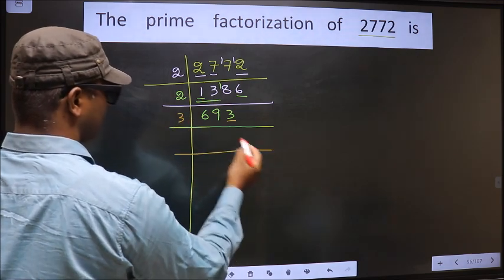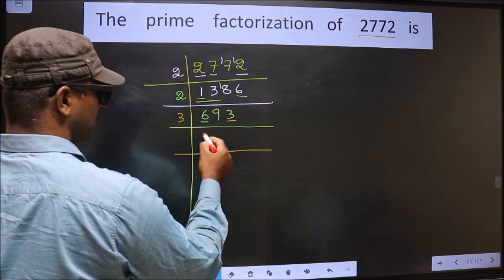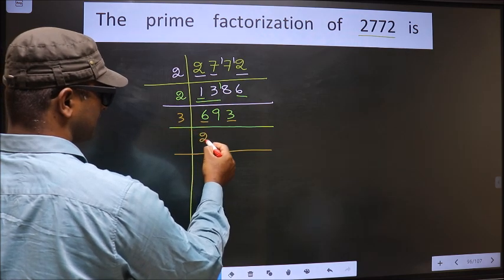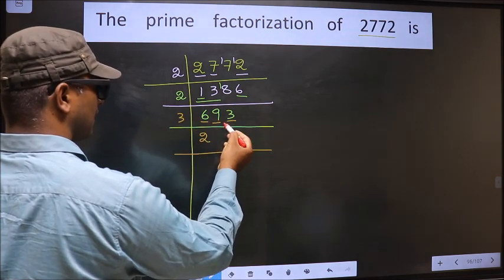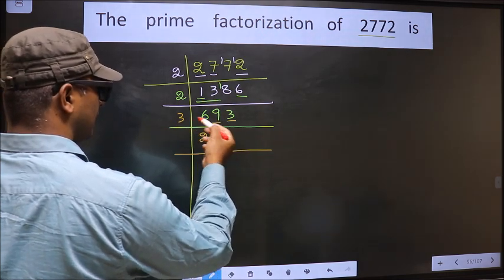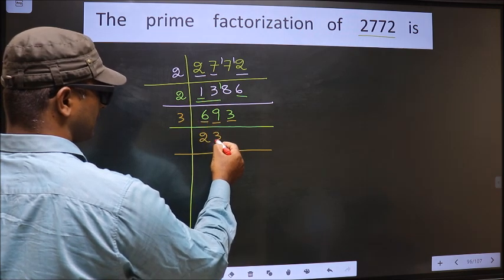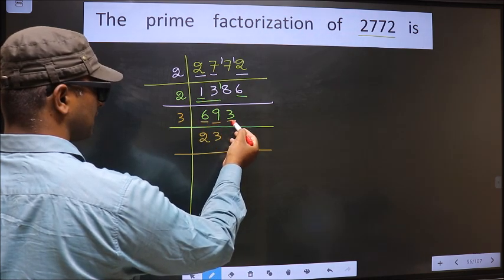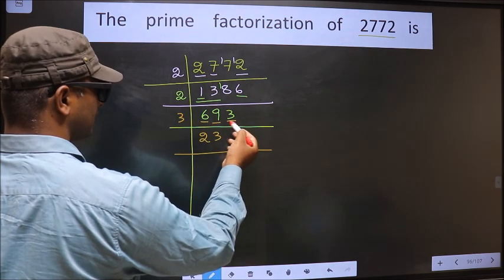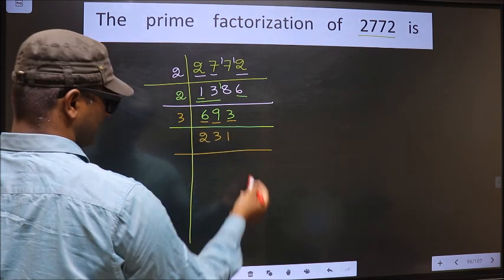The first number is 6; when do we get 6 in the 3 table? 3×2=6. The other number 9 — when do we get 9 in the 3 table? 3×3=9. The other number 3 — when do we get 3 in the 3 table? 3×1=3.